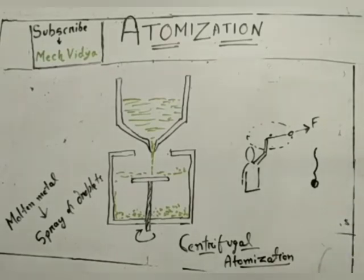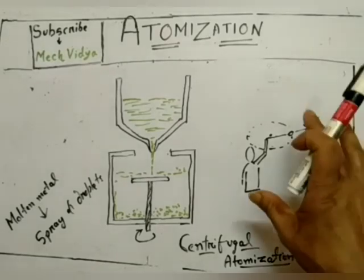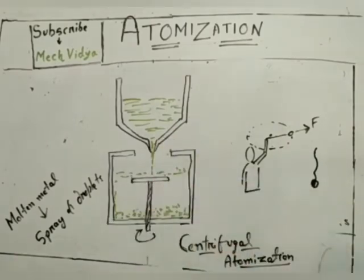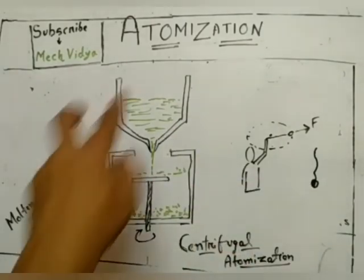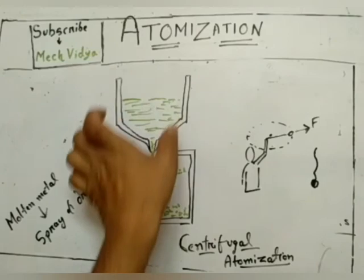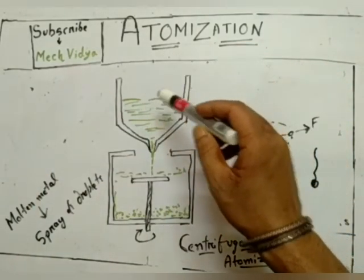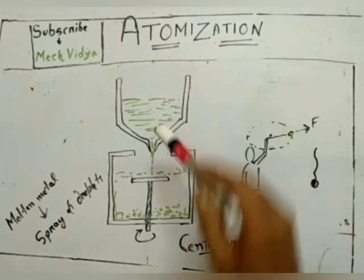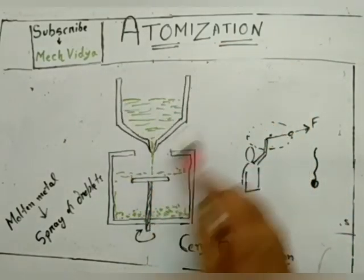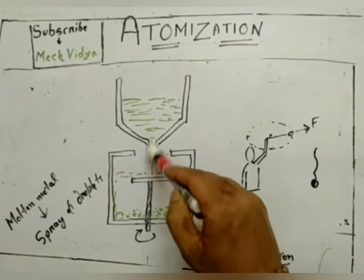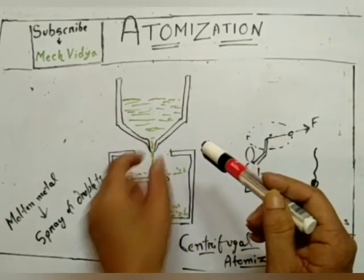Now here we are taking help of centrifugal force on this logic to get our metallic powders. What we are doing here is we will have an overhead tank. In this overhead tank we will pour our molten metal. This molten metal, by the action of gravity, will be allowed to fall at a very high speed through this converging nozzle.